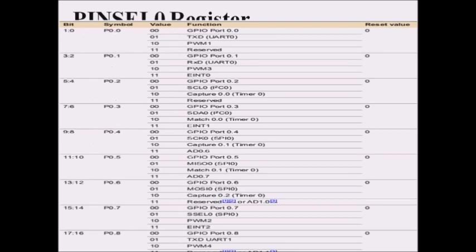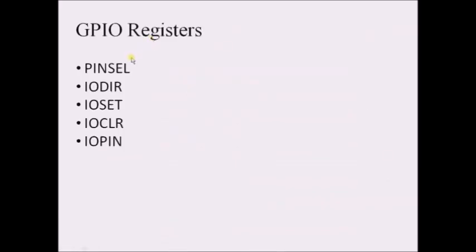Each pin contains 4 configurations. For example, port 0.0 can act as a GPIO, as a transmitter, as PWM, or as a receiver. We can work each single pin in multiple modes. If you want to select port 0.0 as a GPIO, you make it 00 in the PINSEL register. The PINSEL register is divided into 3 parts: PINSEL0, PINSEL1, and PINSEL2. Each PINSEL register contains 32 bits, and each pin occupies 2 bits in the PINSEL register.